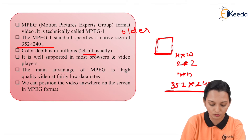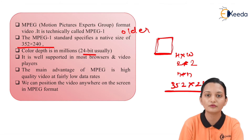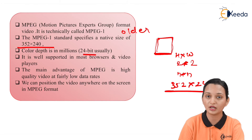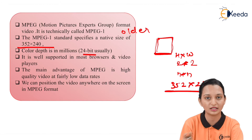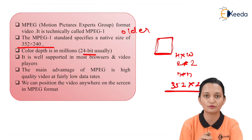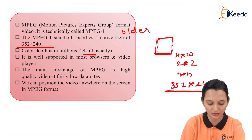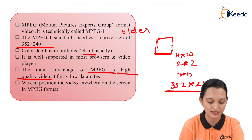The main advantage of MPEG is high-quality video at a fairly low data rate. Data rate refers to input and output rate — if 4 bits in and 4 bits out can be transmitted within a very low transmission period from sender to receiver, that is a good data rate. MPEG provides high-quality video at a fairly low data rate, and this is a key advantage.